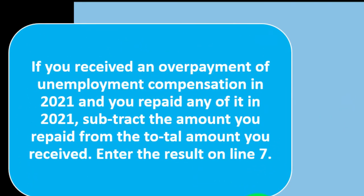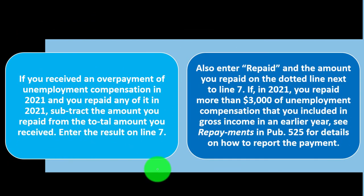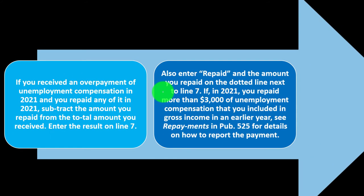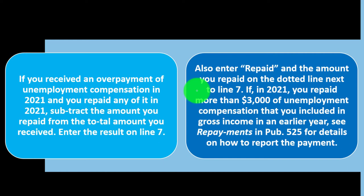If you received an overpayment of unemployment compensation in 2021 and you repaid any of it in 2021, subtract the amount you repaid from the total amount you received and enter the result on Line 7. Obviously, if you didn't get to keep the money and had to repay it, you can compensate for that. Also enter 'repaid' and the amount repaid on the dotted line next to Line 7. The general idea is you want to report what's on the 1099-G; if there's any adjustment — say you repaid some — tell them so they can match up their records without a disparity.